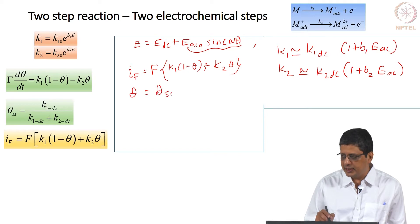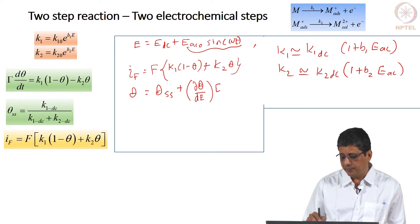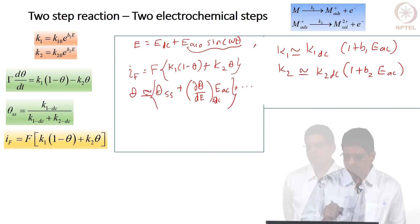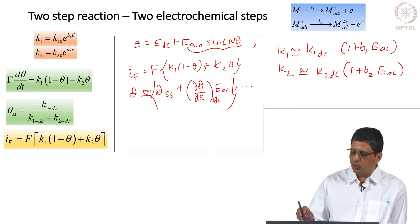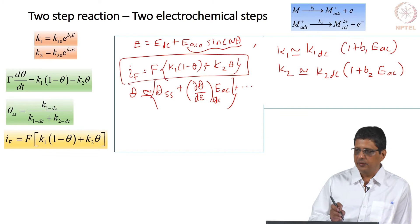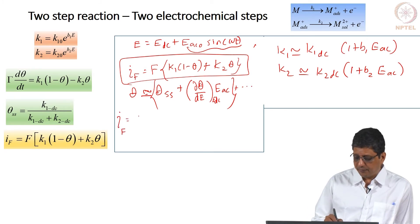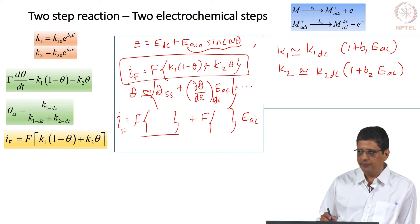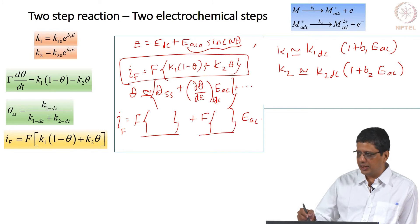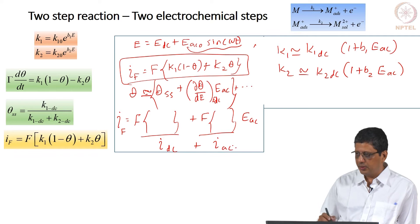We also expand theta in a Taylor series around the DC value and keep only the first-order term. If I approximate k1, k2, and theta this way and substitute, I get an expression for the faradaic current grouping constant terms (not depending on E_AC) and first-order E_AC terms. Second-order and higher terms are neglected. So I write this as I_DC plus I_AC for the faradaic current.